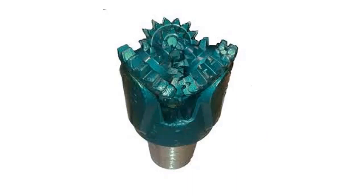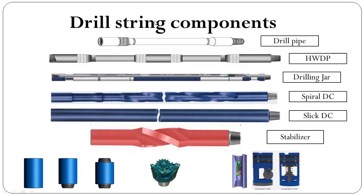The drill bit is the bottommost part of the drill string or BHA. It has cutting insert elements that cut or drill the formation. All drill string components together provide two common functions: first, they provide a passage for the drilling fluid from the kelly or top drive to the bit at the bottom of the drill string; and second, they transmit RPM from the top drive system or kelly to the bit.